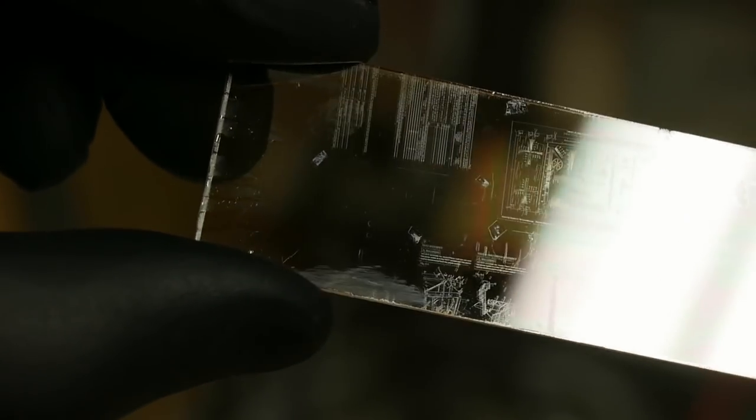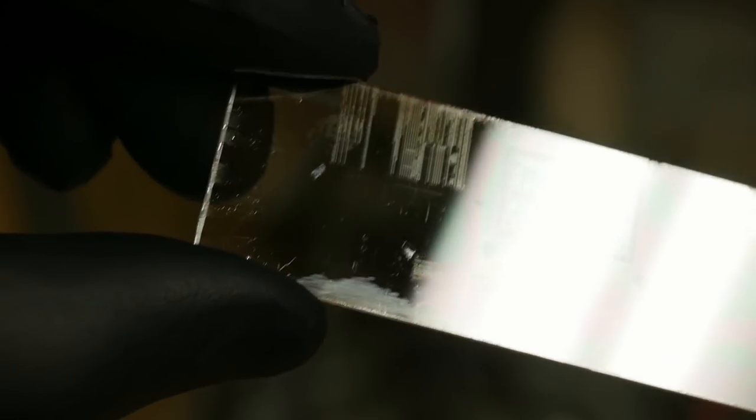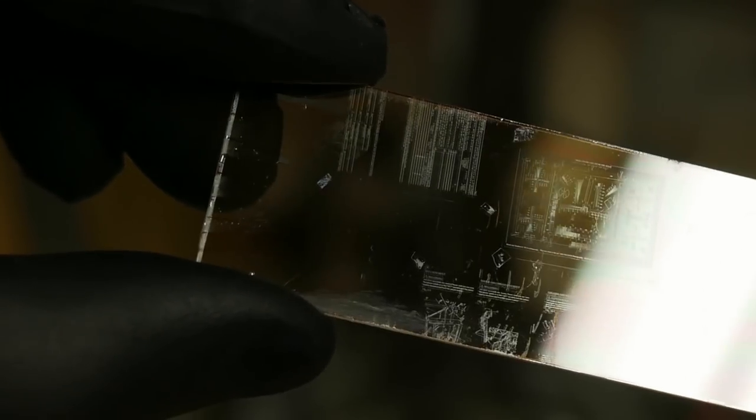You might think I messed up. I didn't put metal down first before the photoresist, but we're actually going to use the liftoff technique. So I'm going to put metal down now and then get rid of the photoresist. And this avoids the step of etching or dealing with any of the etchant chemicals.